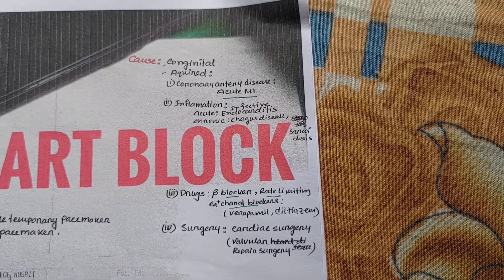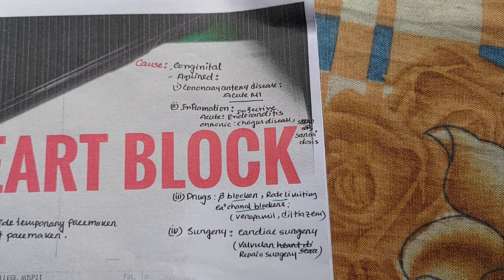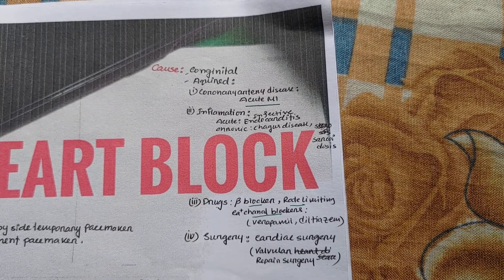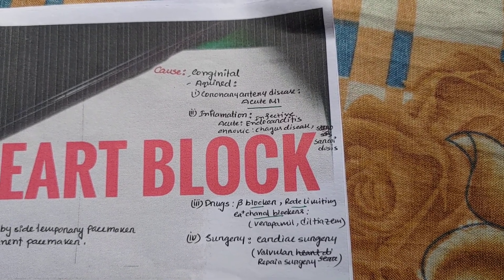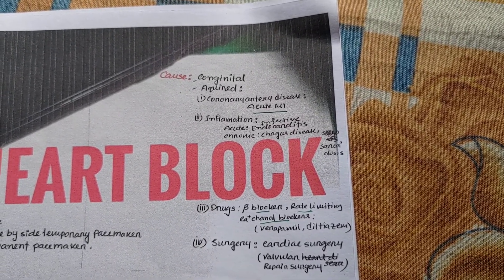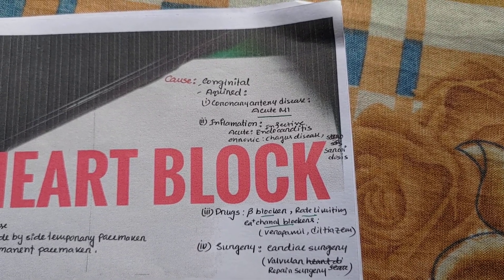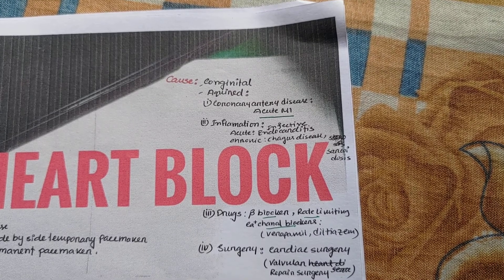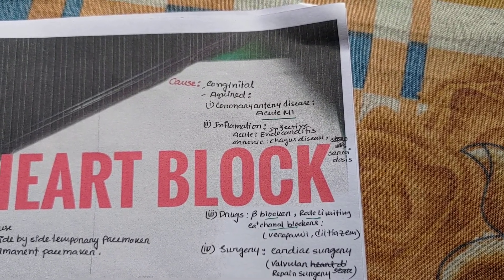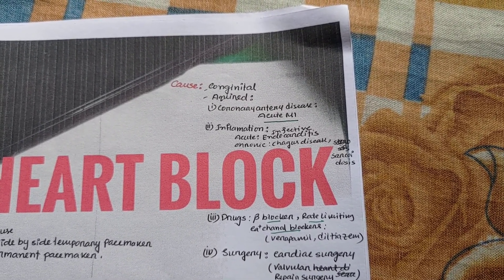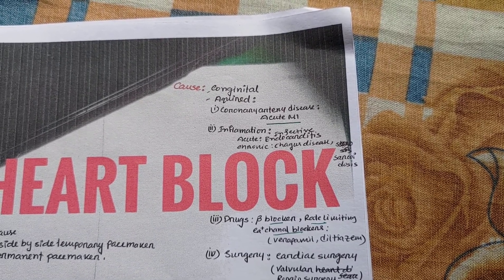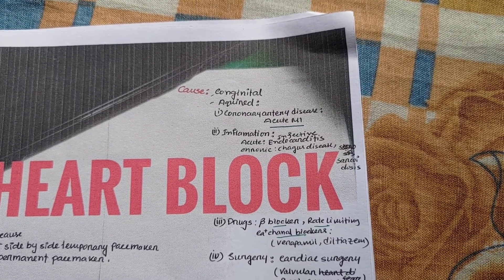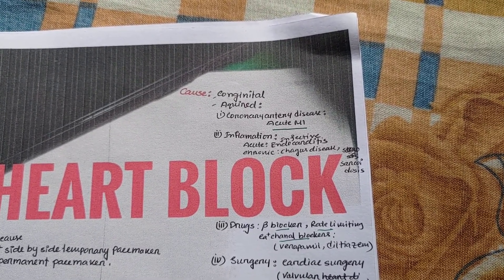What are the causes of complete heart block? The causes include coronary artery disease, acute MI, inflammation — both acute and chronic. Acute inflammation includes infective endocarditis. Chronic disease includes sarcoidosis.